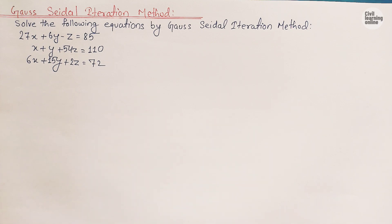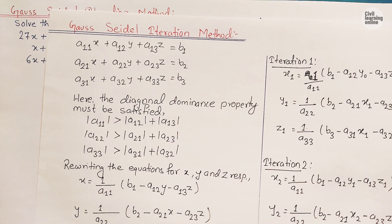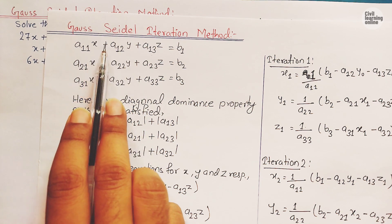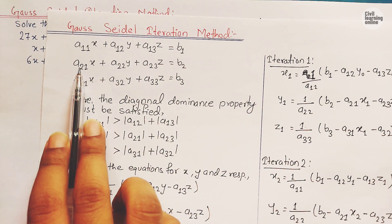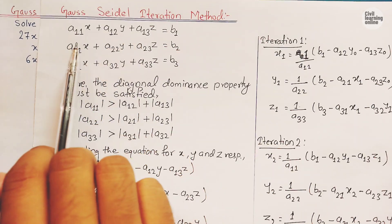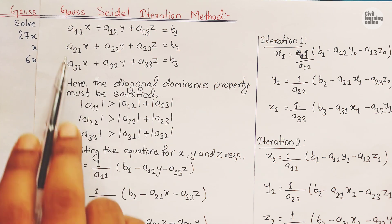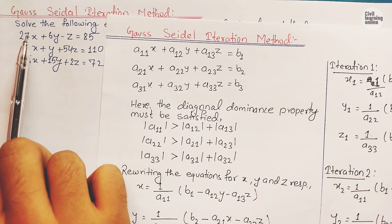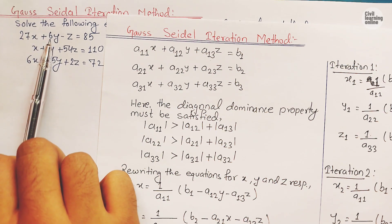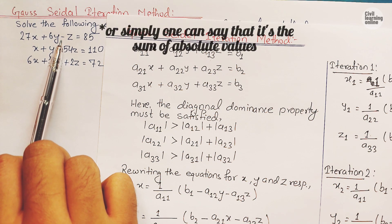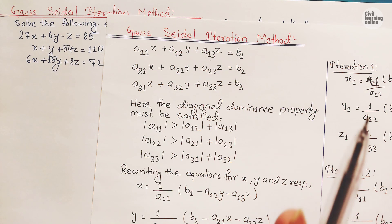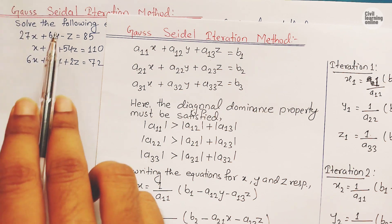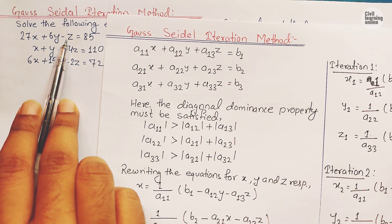The diagonal dominance property: suppose we have equations in the form a11·x + a12·y + a13·z = b1. In the first row, a11 must be greater than the sum of the other two coefficients. We ignore signs and just add the magnitudes. So 27 is greater than 6 + 1 = 7. The first diagonal dominance condition is satisfied.